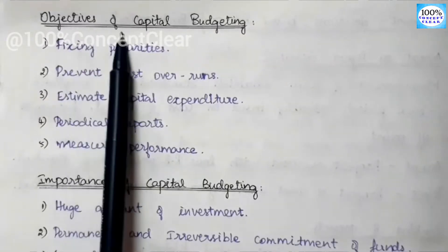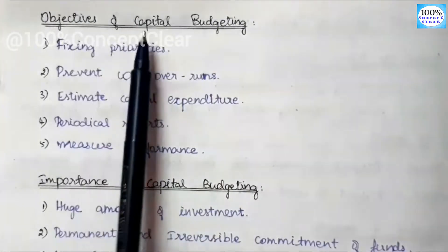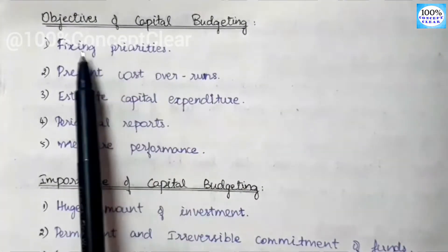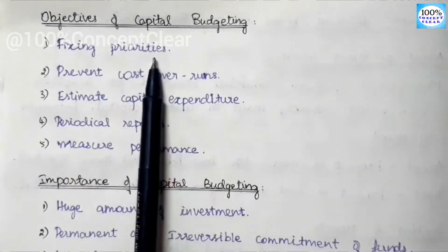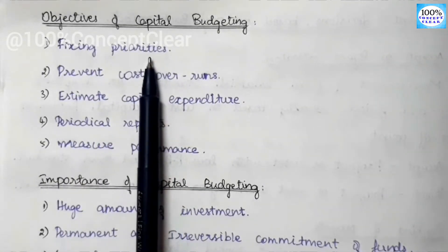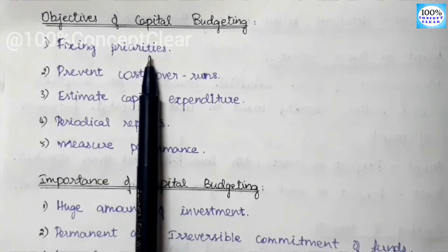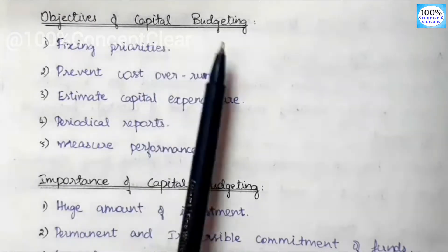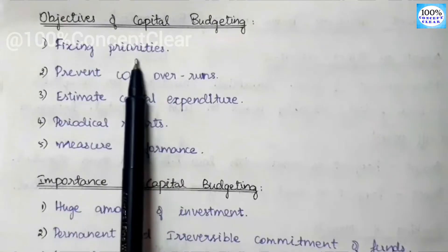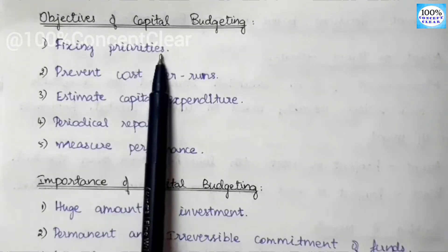Next topic is the objectives of capital budgeting. The first objective is Fixing Priorities. In a business, many projects come up but we have limited funds. So we need to invest in the project that will give more profit, and we need to fix the capital budget accordingly — that is Fixing Priorities.